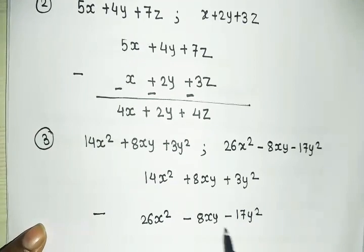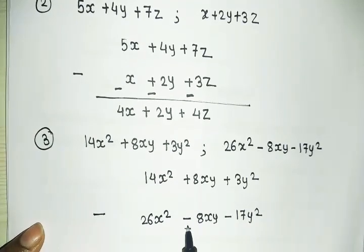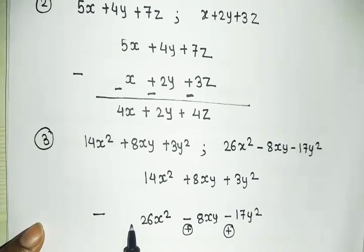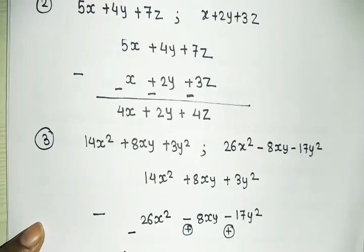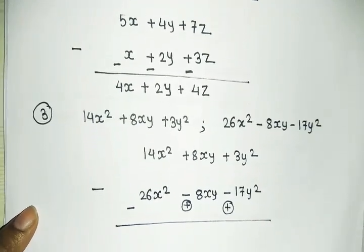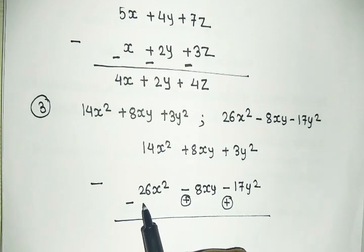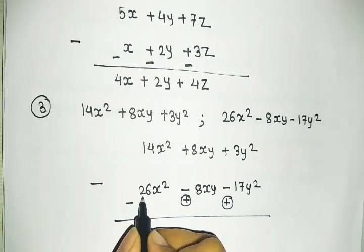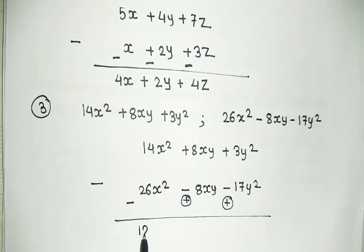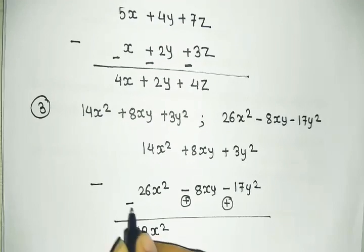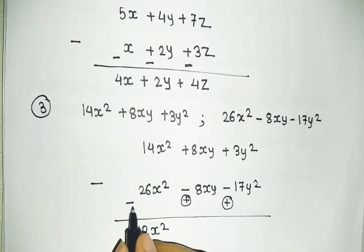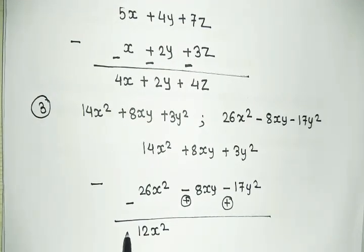This minus sign will change the signs of the second expression. Minus becomes plus, minus becomes plus, and plus becomes minus. Now: 14 minus 26 — plus minus becomes minus 26, minus 14. The bigger number is 26 and its sign is minus. So we get minus 12x².